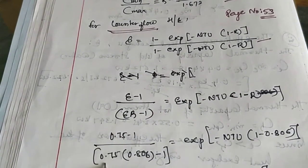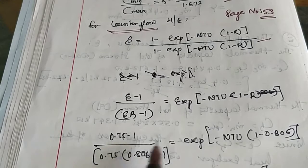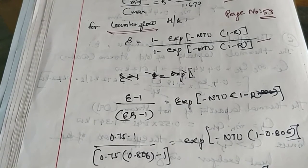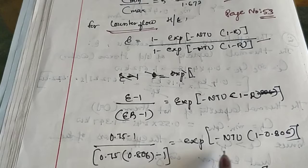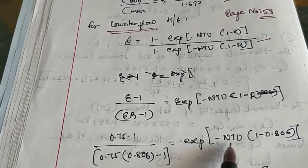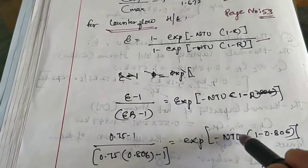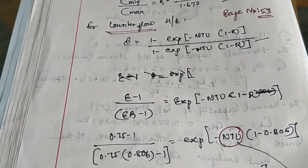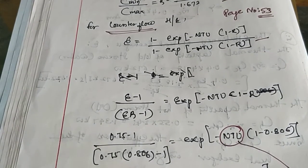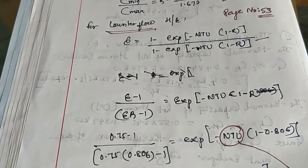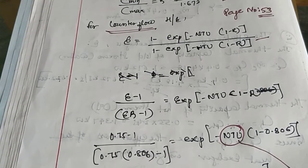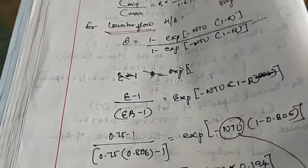Substituting all known values — ε = 0.75, R = 0.806 — into the counter flow effectiveness equation and applying logarithms to solve for the unknown NTU, we get NTU = 2.635.